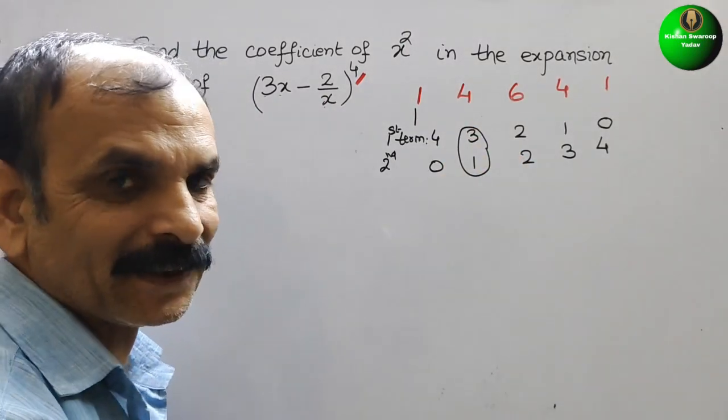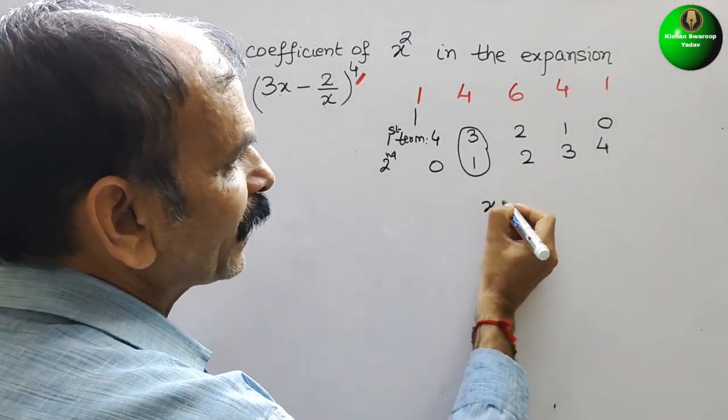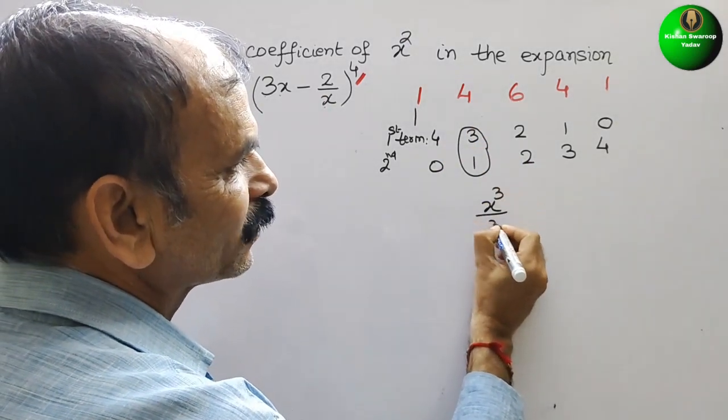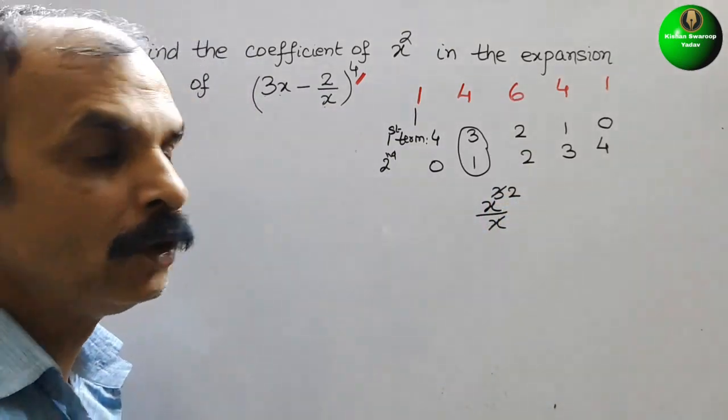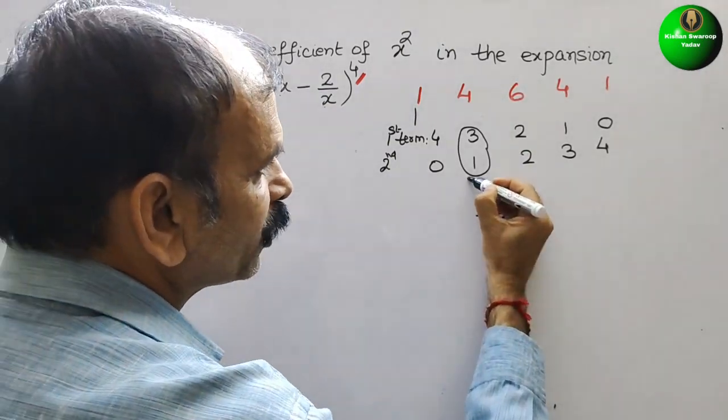3x, that means if we write it as x³ by x, now it will be x². Therefore, we will go for this combination.